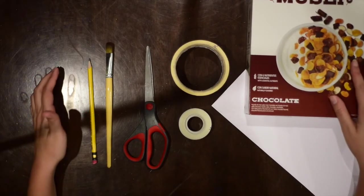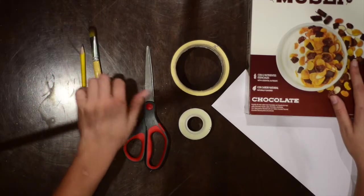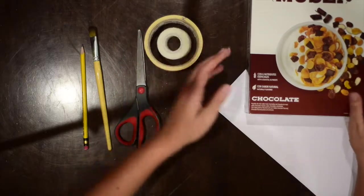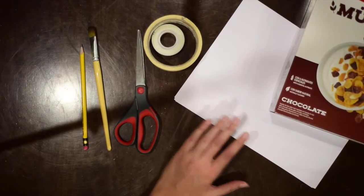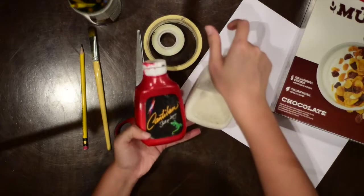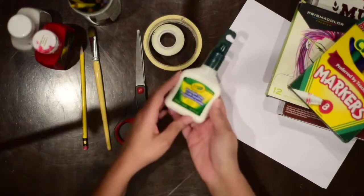Okay guys, for this project we will need several things. We're going to need pencil, a paintbrush, scissors, tape, whatever kind of tape, a box of cereal, white paper, and things to color. So you guys can use pencils, you guys can use paint, you can use markers, and we're also going to need glue.